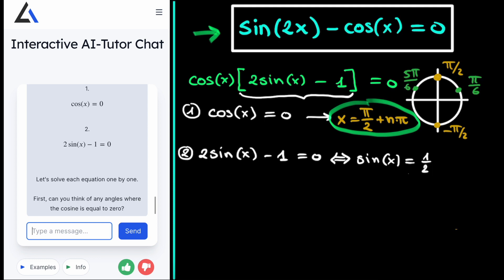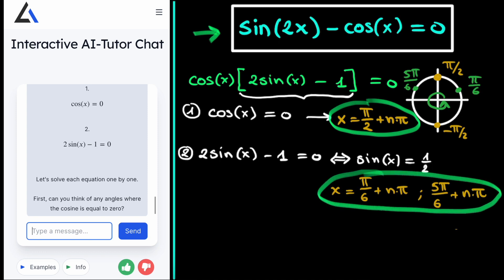And for each of these solutions, we can add an entire circle, so adding 2 pi. This means that for this sub-problem, we get solutions that are the following. When x is equal to pi over 6 plus n times pi, and when x is equal to 5 pi over 6 plus n times pi. And this is the second set of solutions for which our original equation is true. And thus we have found all of the angles x, for which the sine of 2 times this angle, minus the cosine of this angle, is equal to 0.